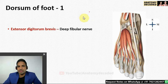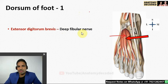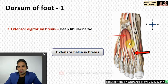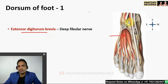Now let's cover the muscles of the foot region. In the foot there are two groups: dorsum of foot and sole of foot. In the dorsum of foot there is only one muscle: extensor digitorum brevis. The medial-most slip of this muscle separates early and is referred to as extensor hallucis brevis — it is not a separate muscle but part of extensor digitorum brevis. Nerve supply is by the deep fibular nerve, which continues from the anterior compartment of the leg along the dorsum of the foot.